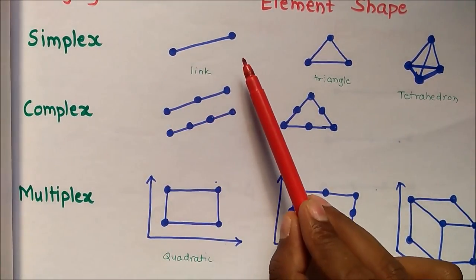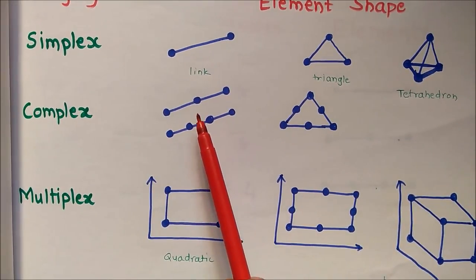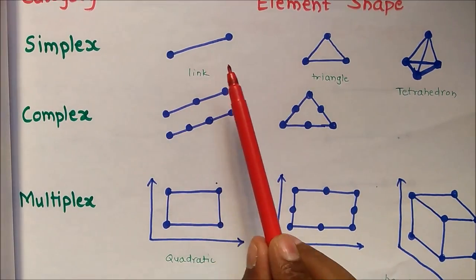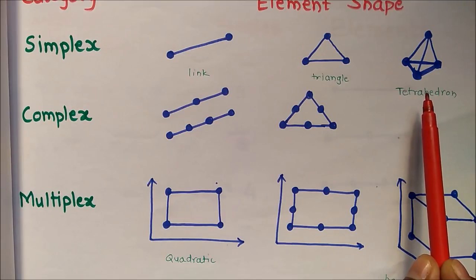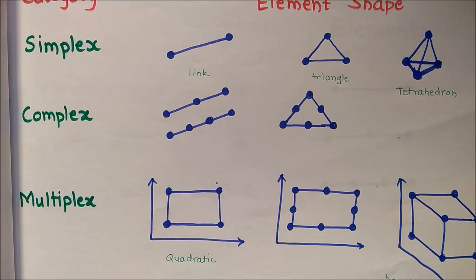In summary: simplex elements use only corner nodes with linear interpolation functions; complex elements add intermediate nodes and use quadratic or cubic functions while keeping straight edges; multiplex elements, which include quadrilateral and hexahedral types, require edges parallel to the coordinate axes and are converted using natural coordinates (ζ, η) for general use. Multiplex elements are the most widely used today. This covers simplex, complex, and multiplex elements and their interpolation functions.